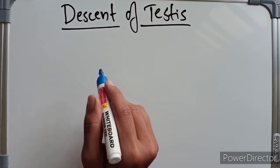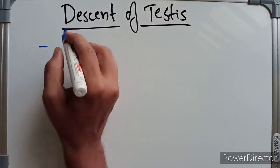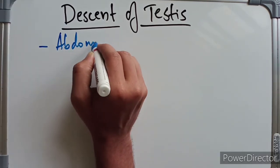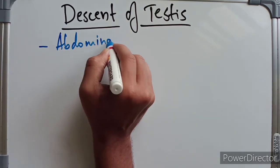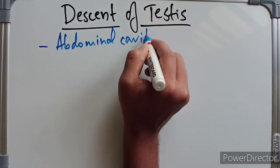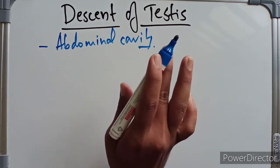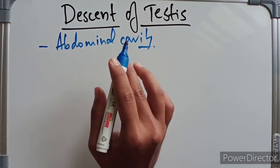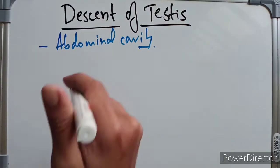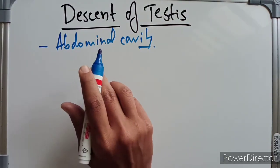Coming to the descent of testis, the testis develops in the region of the abdominal cavity on the posterior wall where the temperature is high and not suitable for proper spermatogenesis. Hence, it migrates out of the abdominal cavity into the scrotum.